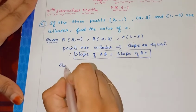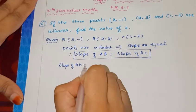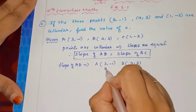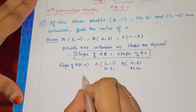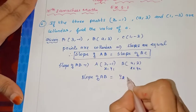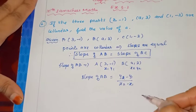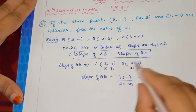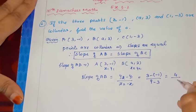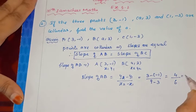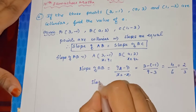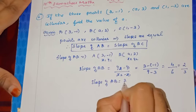To find slope of AB, we need the points. A is (3, -1) — this is x1, y1. B is (A, 3) — this is x2, y2. Slope of AB formula: y2 minus y1 by x2 minus x1. So y2 is 3, minus of minus 1, by x2 minus x1: A minus 3. That gives 3 plus 1 = 4, by A minus 3. So slope of AB is 4 by A minus 3, which simplifies to 2 by 3.